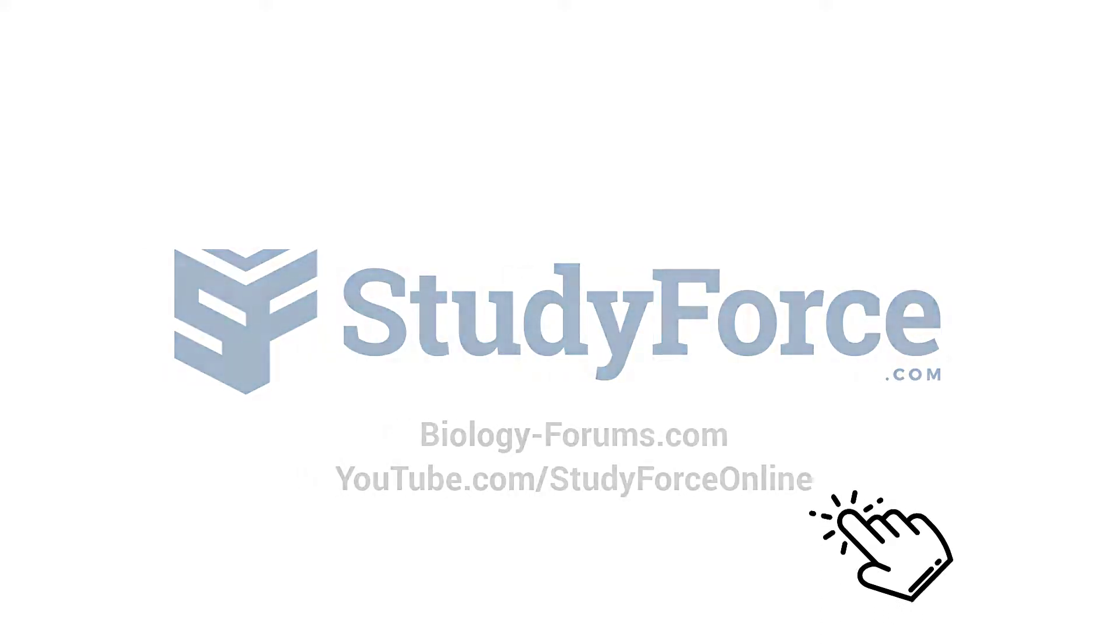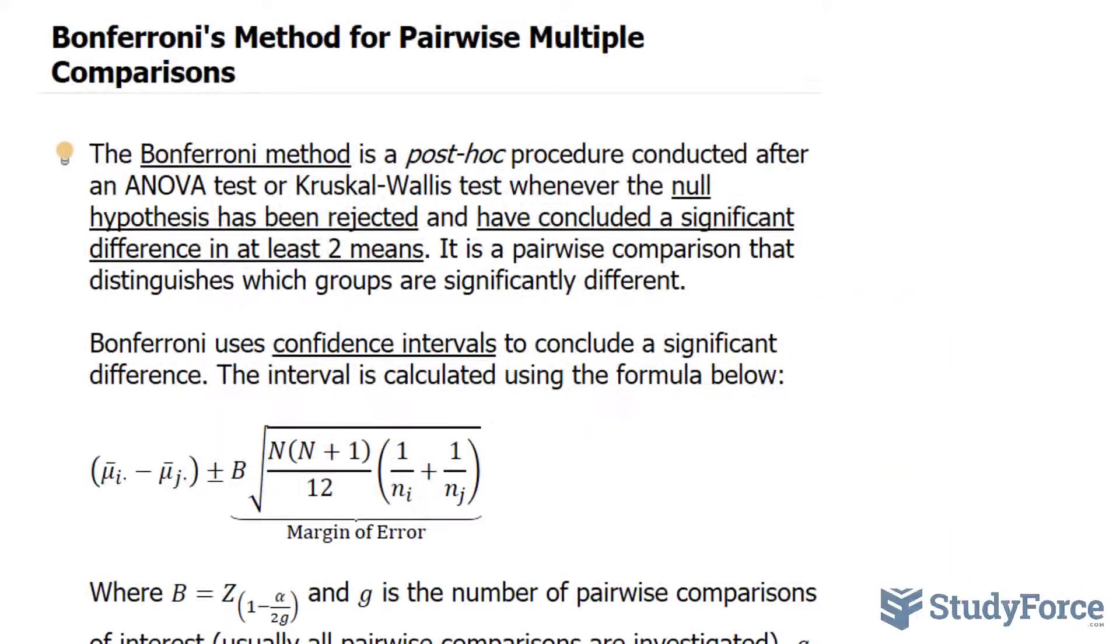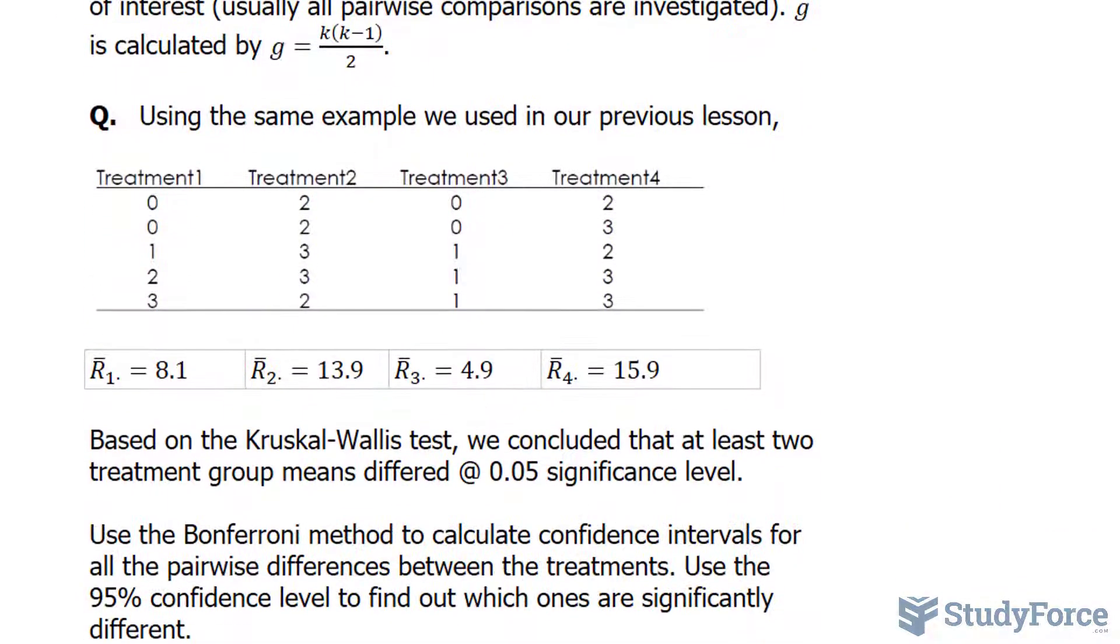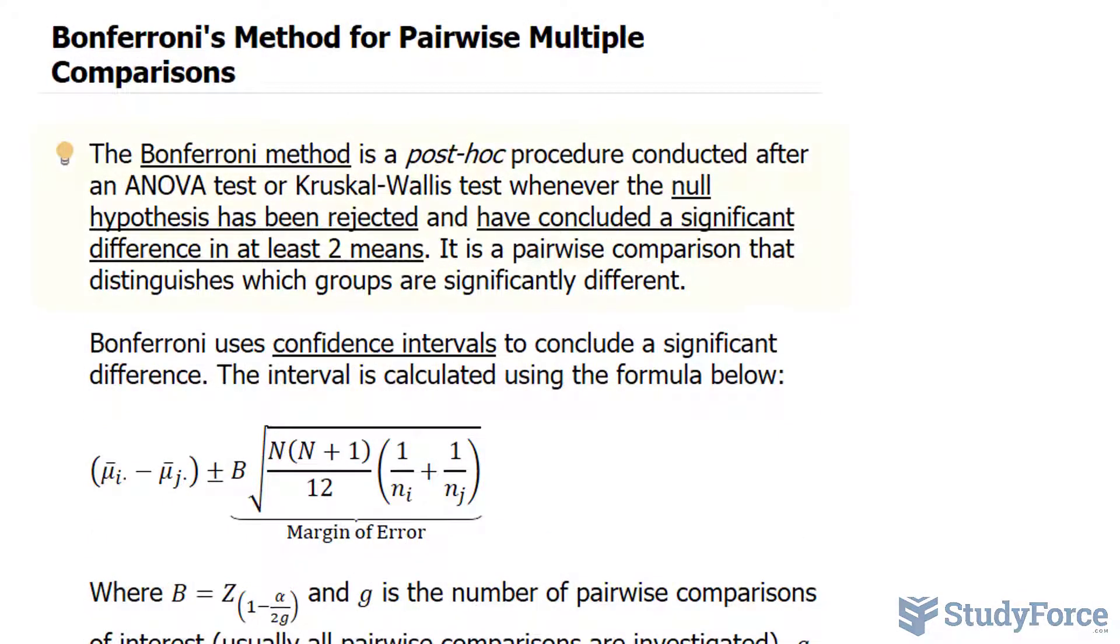In this lesson, we'll discuss Bonferroni's method for pairwise multiple comparisons. Before we start the question, let's discuss what this is. The Bonferroni method is a post-hoc procedure conducted after an ANOVA test or Kruskal-Wallis test whenever the null hypothesis has been rejected and have concluded a significant difference in at least two means. It is a pairwise comparison that distinguishes which groups are significantly different.